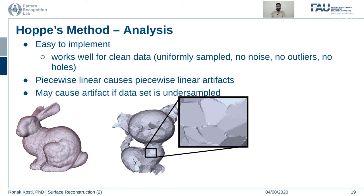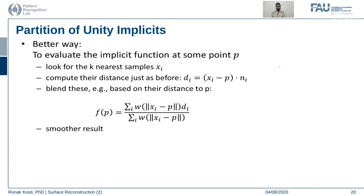Partition of Unity implicits offer an improvement. To evaluate the implicit function at some point, we look for the k nearest samples x_i, compute their distance as before, and blend this based on their distances using a weighted function value. Partition of Unity implicits essentially use a distance regularization metric to influence the final result so that a smoother reconstruction is generated.